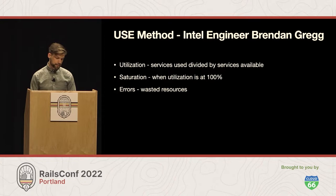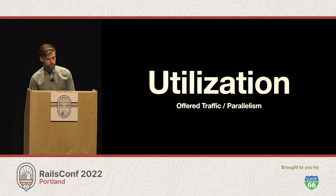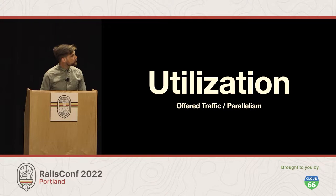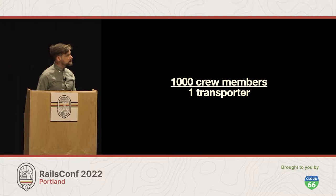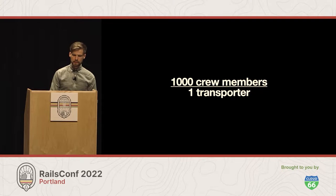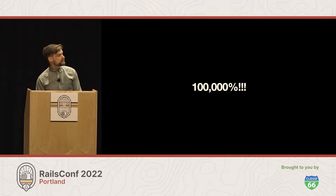If you are processing jobs and they're creating errors, that's preventing other jobs from being successful. We can describe utilization as the offered traffic divided by parallelism. In this case, if we have 41.5 offered traffic, what's the parallelism required to beam off a thousand crew members? With a single transporter pad, that's going to be something like 100,000% utilization.